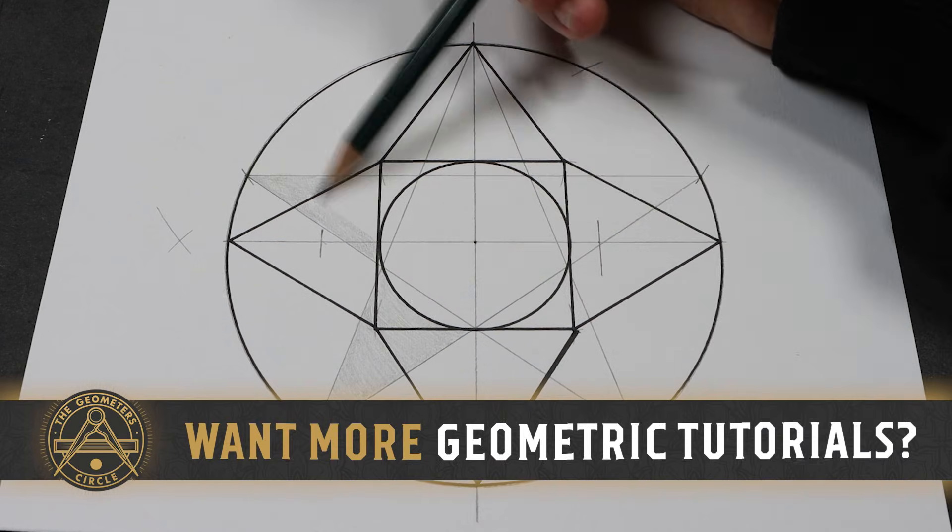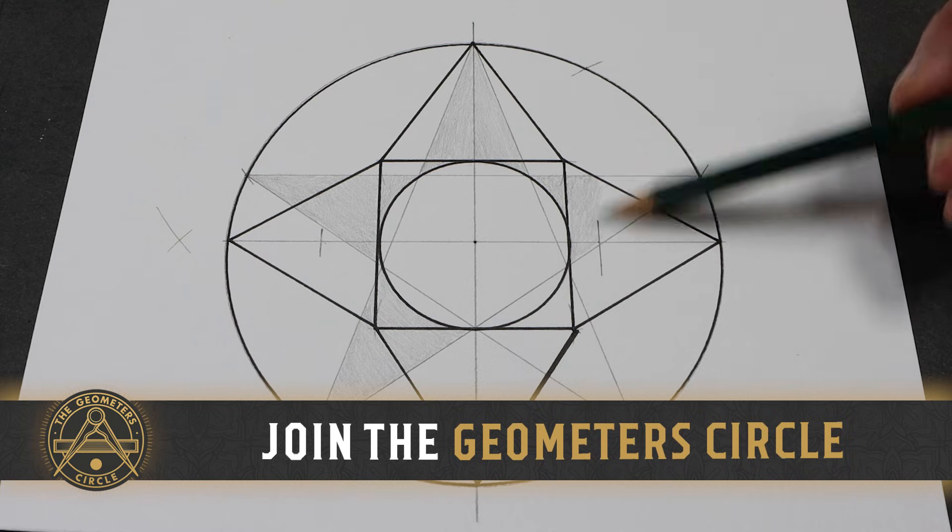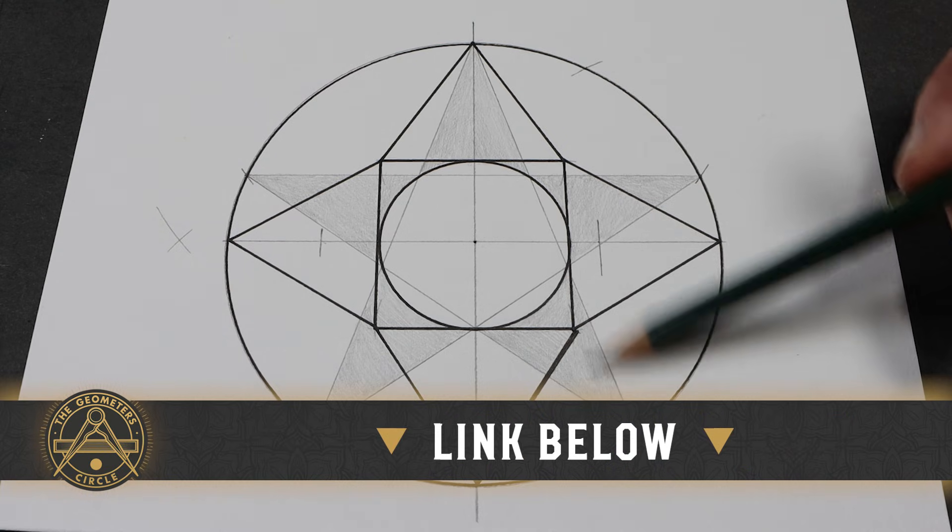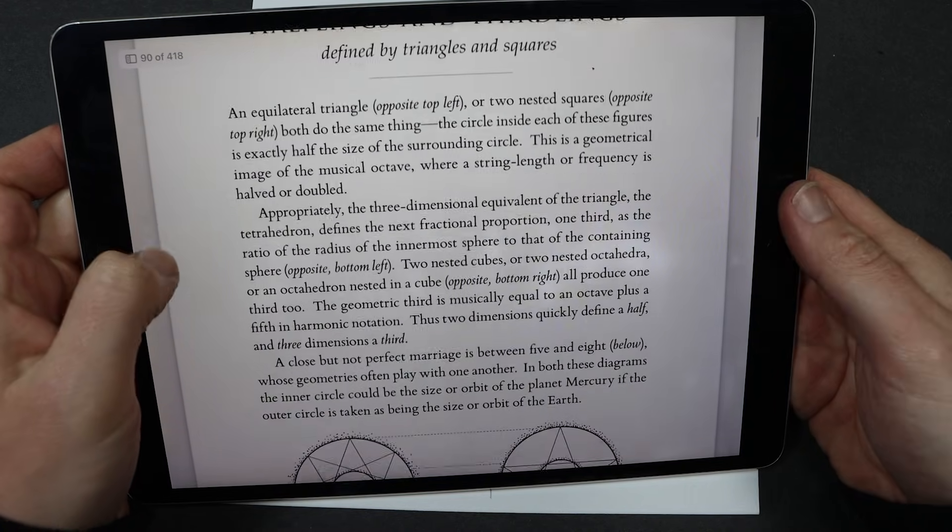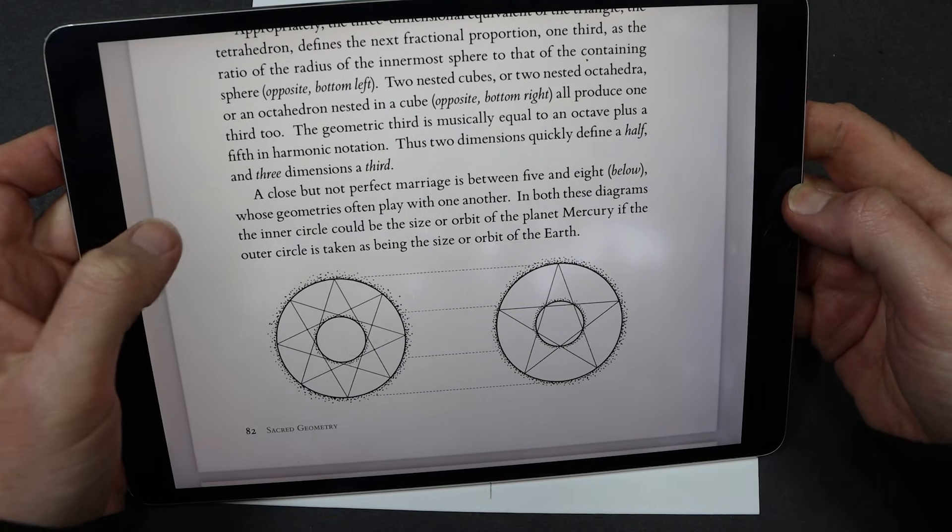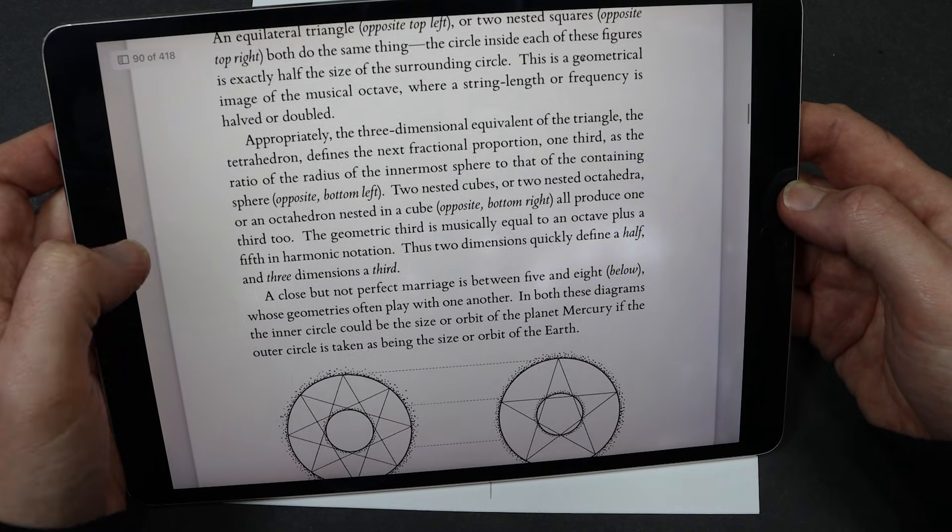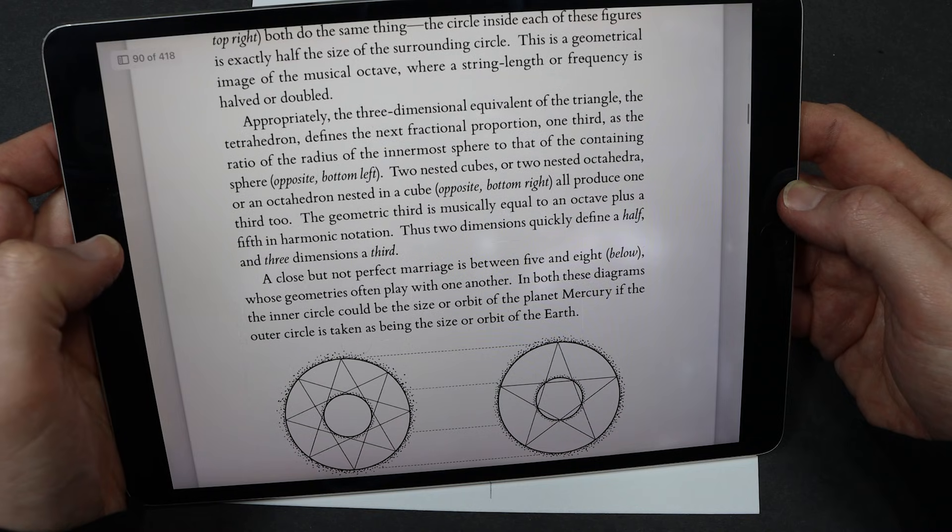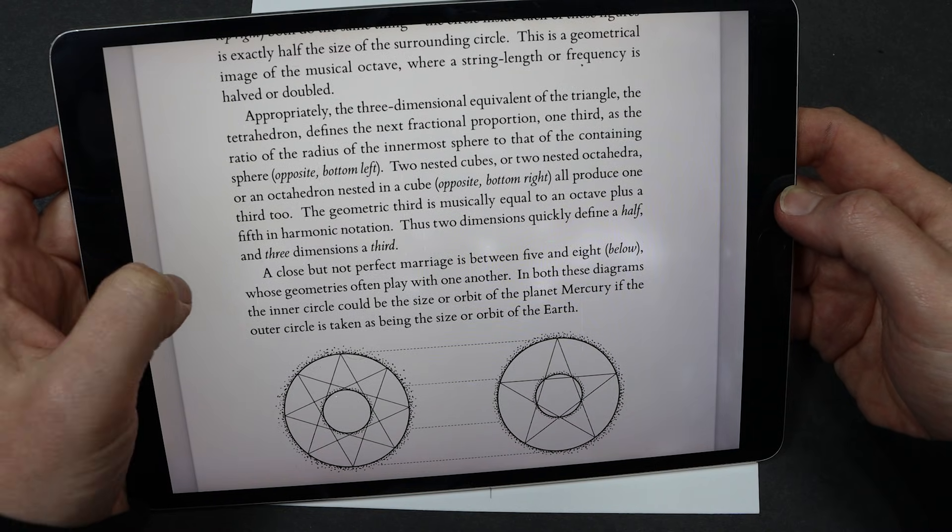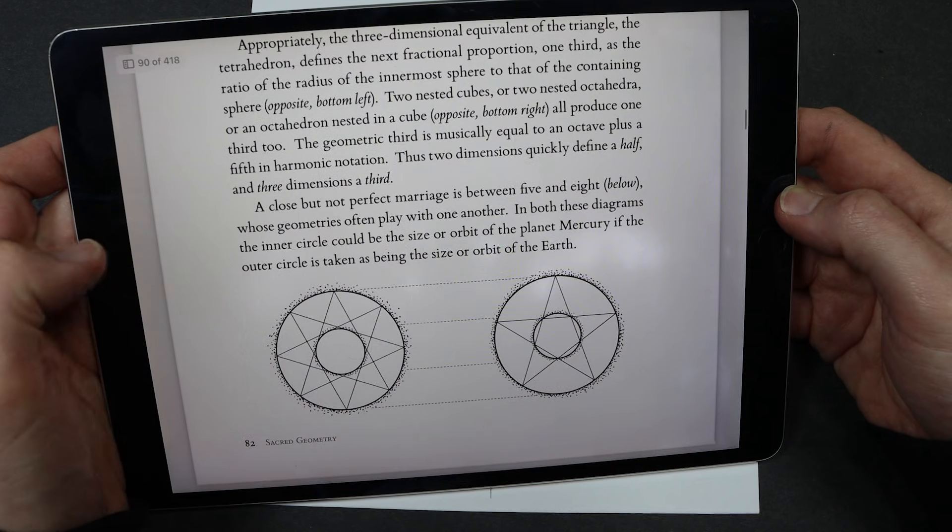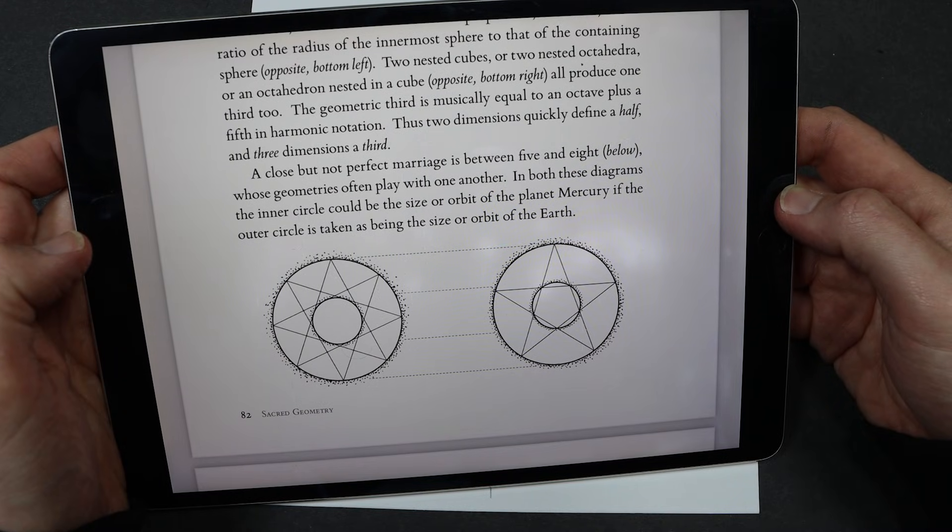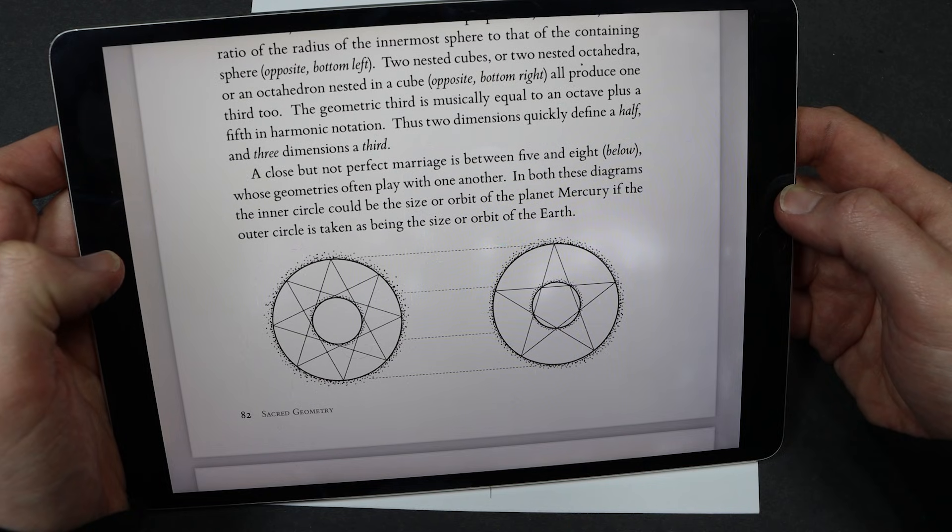And real quick. If you want more geometric art tutorials, sign up to the geometer circle. I post a new one every full moon. Alright. What should we look at next? Halflings and thirdlings. Oh yeah. This is pretty interesting. The circle inside each of these figures is exactly half the size of the surrounding circle. A close but not perfect marriage is between 5 and 8. Whose geometries often play with one another. In both these diagrams the inner circle could be the size or orbit of the planet Mercury. If the outer circle is taken as being the size or orbit of the Earth.